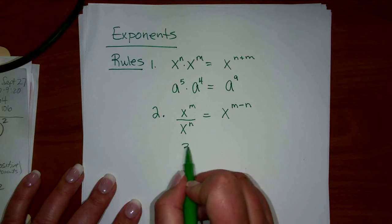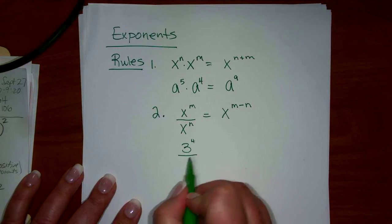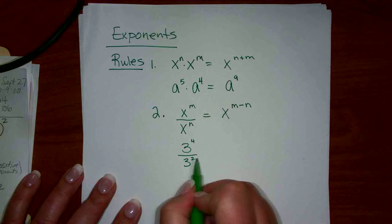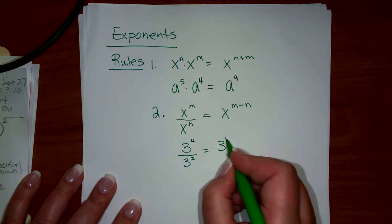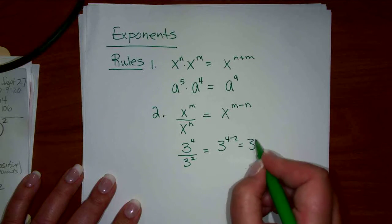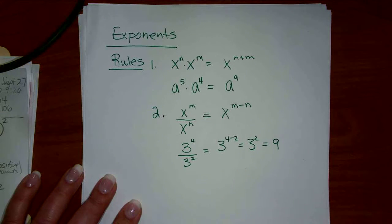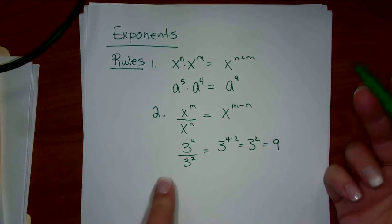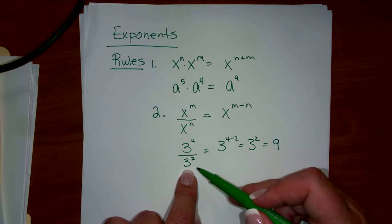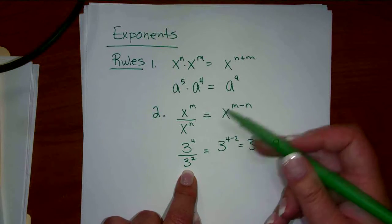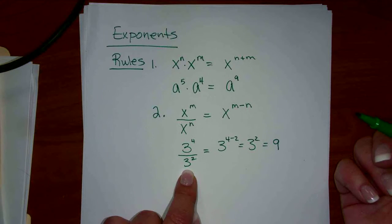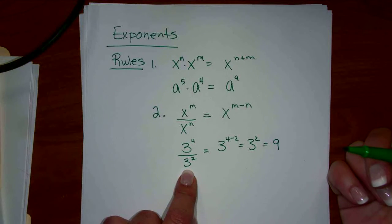For example, if we had 3 to the 4 over 3 squared, using the rule this would look like 4 minus 2, which is squared, which is 9. That would be using the rule. But what we said is if you look at them and say okay, well there's 2 on the bottom and 4 on top, so 2 of them cancel and you'd have 2 left on top. So that's the same answer, but without having to subtract.